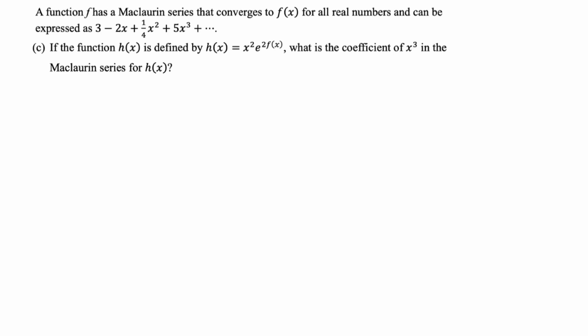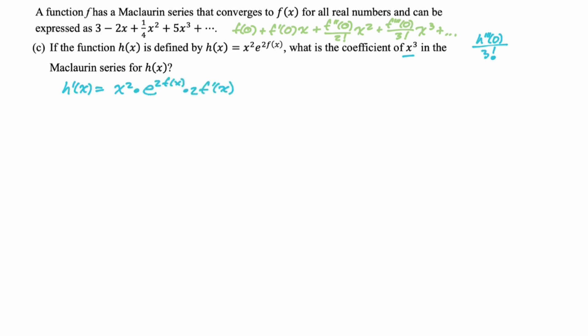The coefficient of x³ is just the third derivative at zero over 3 factorial — don't forget that 3 factorial at the very end. It would be a shame to do all the work and miss that. We need lots of derivatives. h'(x) by the product rule: first times derivative of second is e^(2f(x)) times 2f'(x), plus second times derivative of first, which is e^(2f(x)) times 2x. Factoring out e^(2f(x)) gives e^(2f(x)) times (2x²f'(x) + 2x).